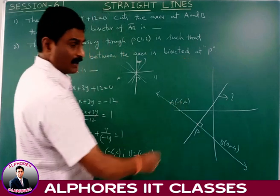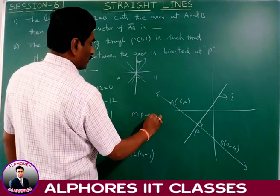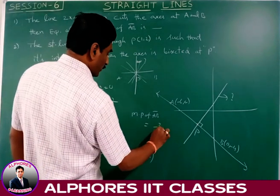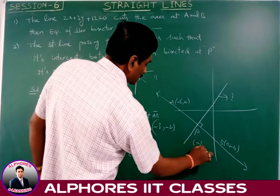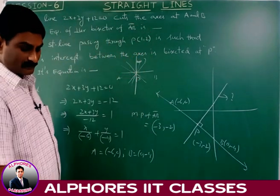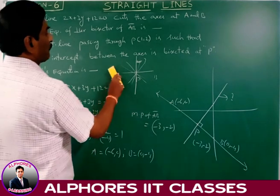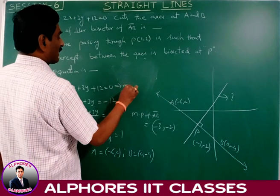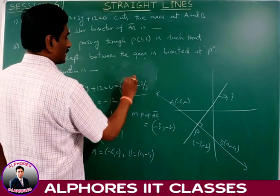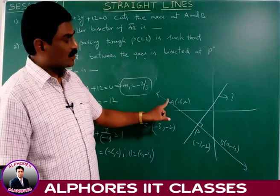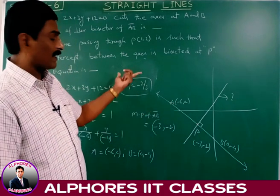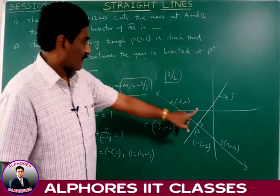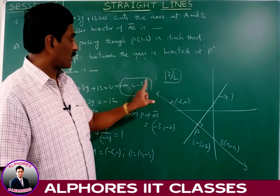Let P be the midpoint of AB. Midpoint equals (x1 plus x2)/2 comma (y1 plus y2)/2, which gives (−6+0)/2 comma (0+(−4))/2, that is minus 3 comma minus 2. So P is (−3, −2). The required line is perpendicular to 2x plus 3y plus 12 equals 0. Slope of the given line is minus 2 by 3, so slope of the required perpendicular line is 3 by 2, using the property m1·m2 equals minus 1.